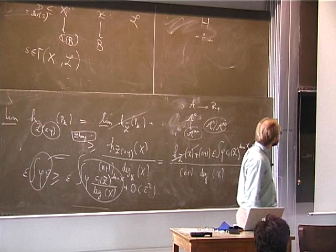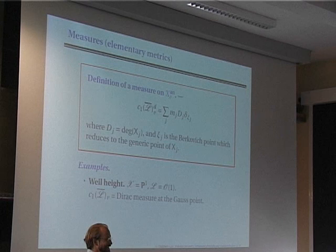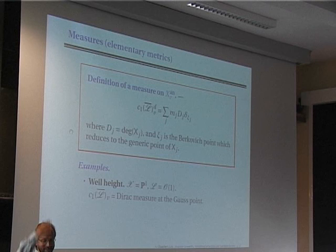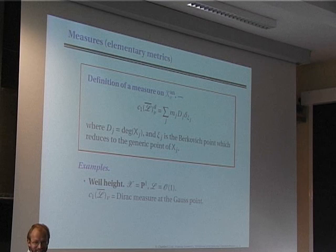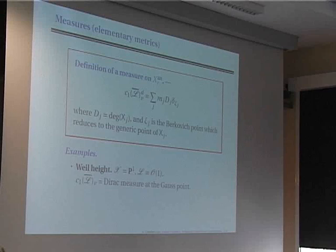I give two examples. First, for the Weil height: the Weil height is given by the standard embedding of ℙ¹ in ℙ¹. The Zariski closure is just ℙ¹ and you don't do anything. The special fiber is just ℙ¹ over F_p̄, the degree of O(1) is 1, and the point ξ corresponding to the special fiber is exactly the Gauss point. So the measure you get is exactly the Dirac measure at the Gauss point. For polarized dynamical systems, you get in a similar way a measure on the Berkovich space analogous to what happens in the complex case.